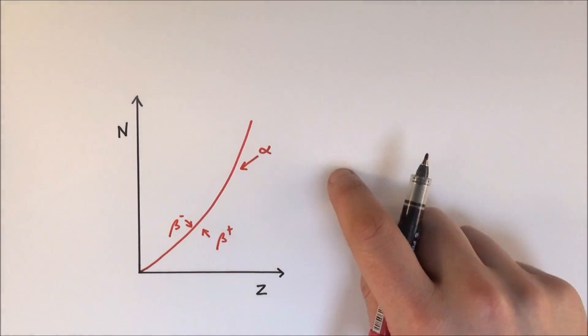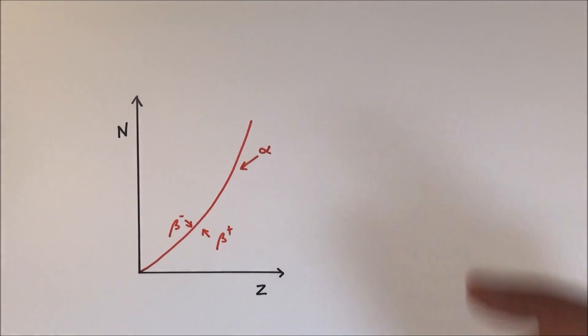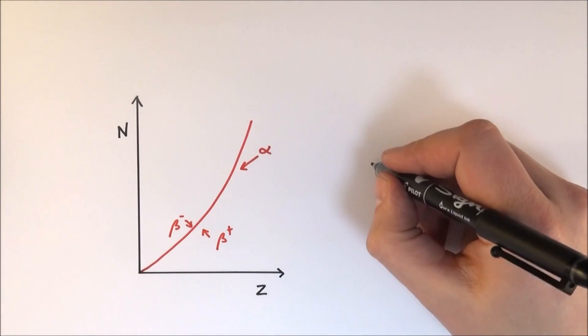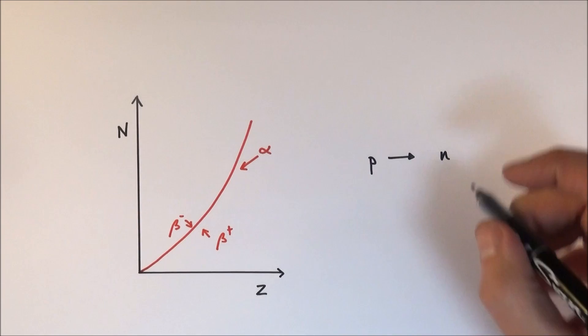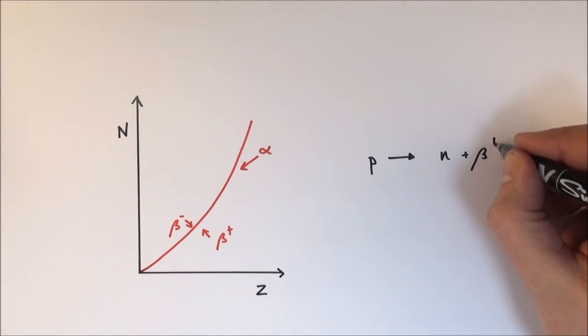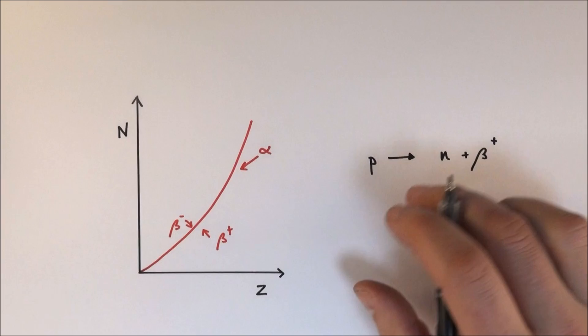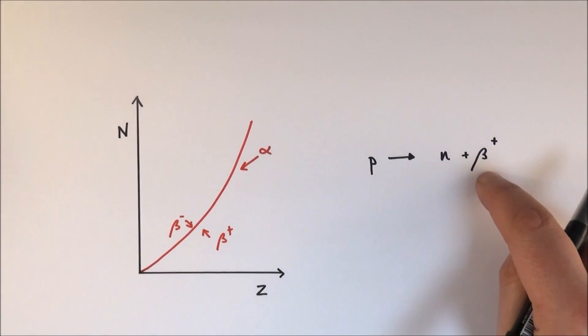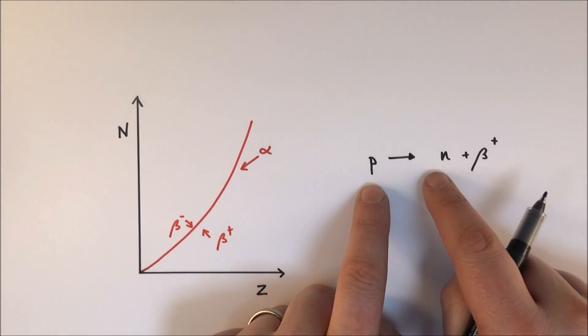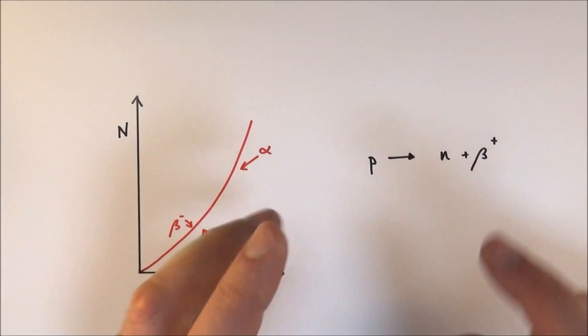So when you have beta plus being emitted, what we get is inside the nucleus we have a proton that ends up turning into a neutron, and as it does so it also releases a beta plus particle. Now if we think about this in terms of charge, we've got something which is a charge of plus one, zero, and plus one, so charge is conserved. Baryon number, well that's got a baryon number of one and that's got a baryon number of one and that's zero, so that's all good.